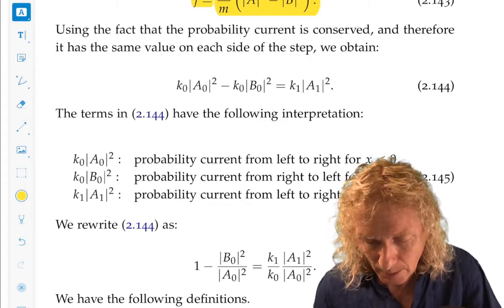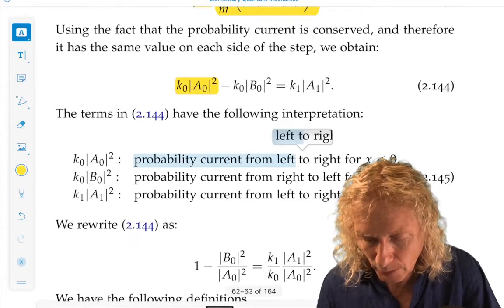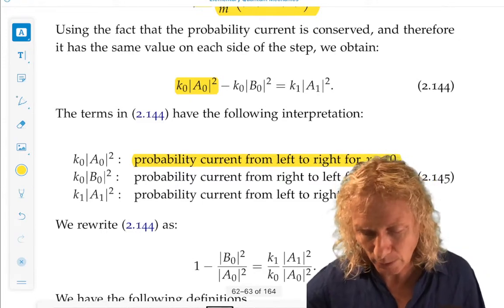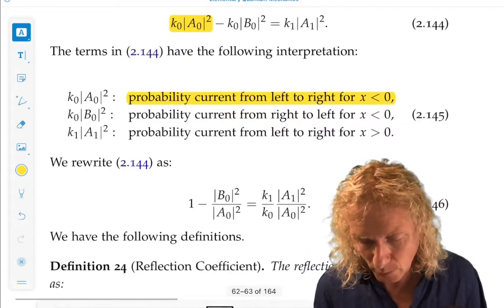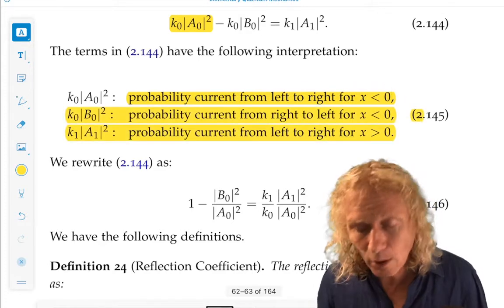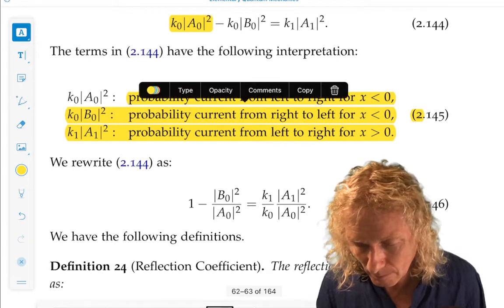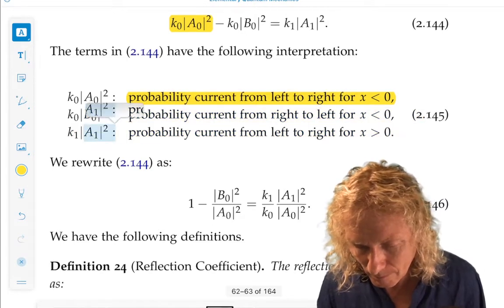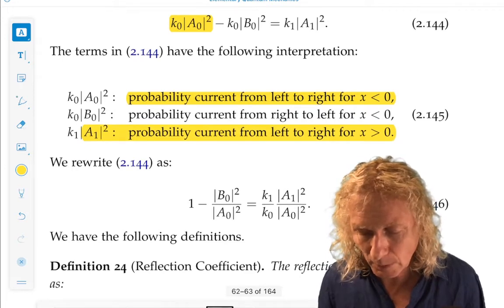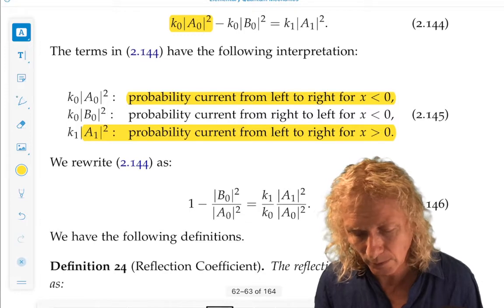This term, kA0 squared, is the probability current from left to right for x less than zero. And you can read that essentially off the equations. kB0 squared is the probability current from right to left, also for x less than zero. And this last term is the probability current from left to right for x greater than zero.